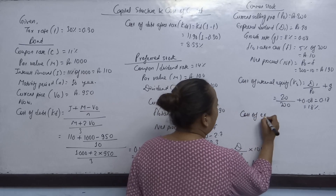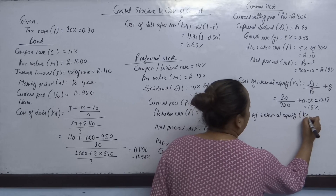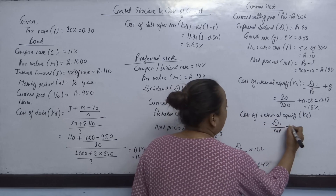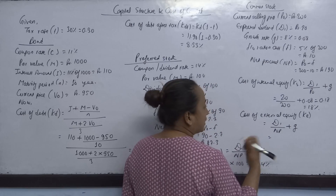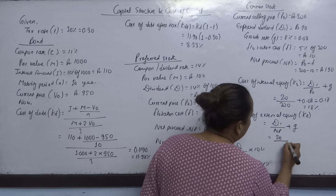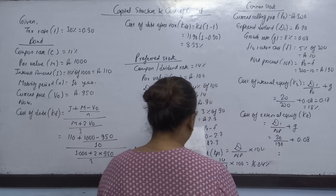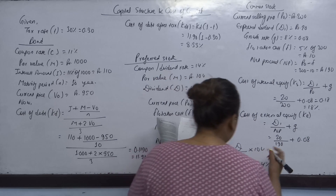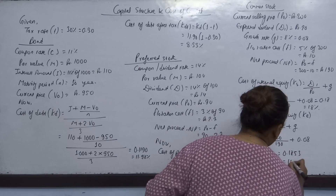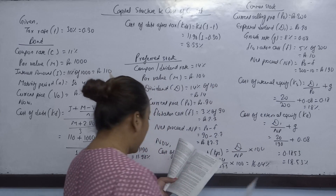Cost of external equity: KE = D1/NP + g. Solving with the net proceeds adjusted for 5% flotation cost: KE = 18.53%.